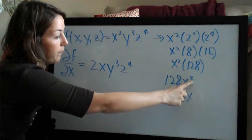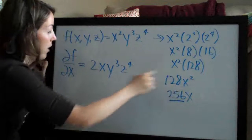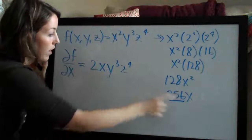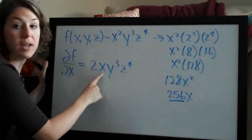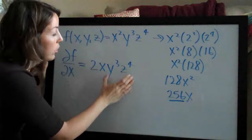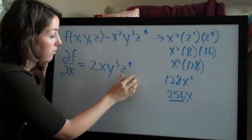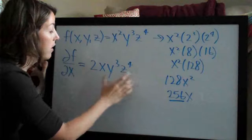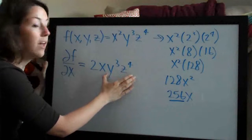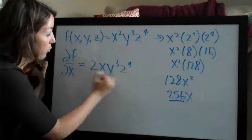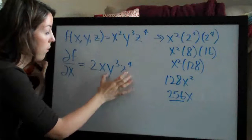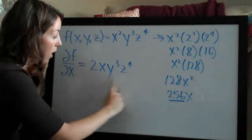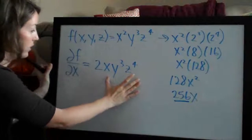We multiplied the two on the x squared out in front, just like we did here — we brought this two out in front and we ended up with a single x, just like we ended up with a single x there. And we left y cubed and z to the fourth because they were absorbed into the coefficient — because they're constants and they're multiplied together, they're part of the coefficient.